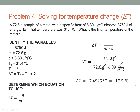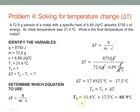Now we can solve for T2. Recalling that T2 equals T1 plus delta T, our T2 is 31.4 plus the delta T we just solved for, 17.5, giving us a final temperature of 48.9 degrees C.